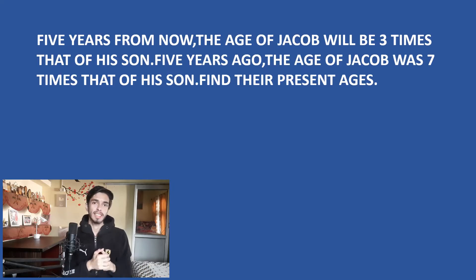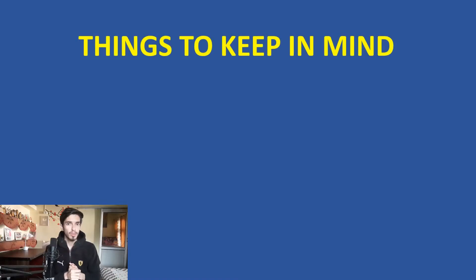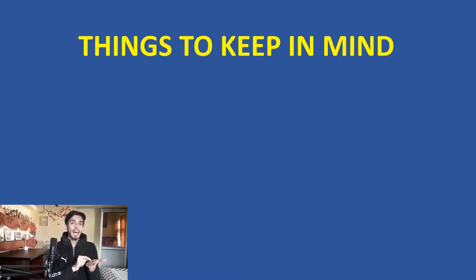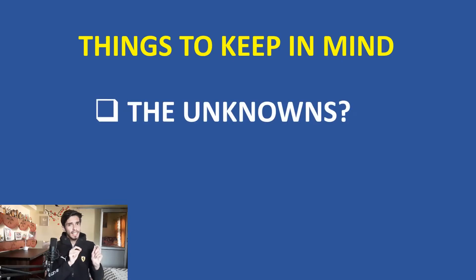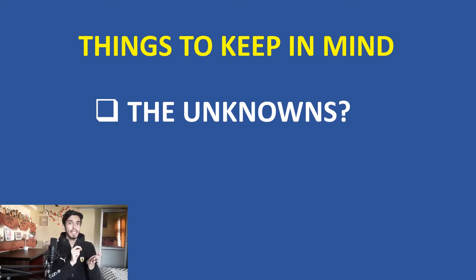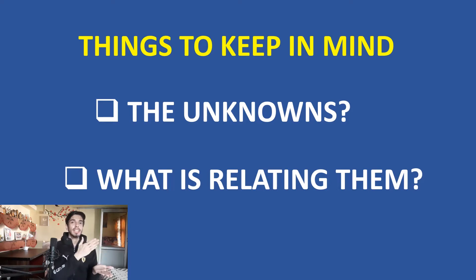Step one in solving any math problem is to read the question carefully. For solving a word problem, you need to keep these things in mind while reading: first, see what are the unknowns and assign a symbol to every unknown. Second, see what is relating those unknowns, and using those relations we will convert the word problem into a mathematical equation and then solve it.